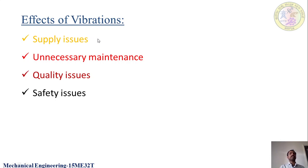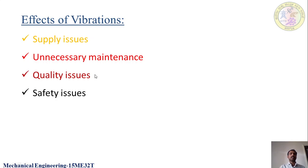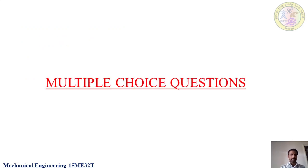Further effects of vibrations include supply issues - if there is reduced availability of machines, we cannot supply finished goods at the scheduled time. Unnecessary maintenance is also required if a machine is vibrating, which is not acceptable. Quality issues arise because if a machine tool is subjected to vibrations, the parts produced will not be accurate as desired - the surface finish or dimensional accuracy may be reduced. Safety issues also arise: if a machine tool vibrates at a higher rate it can damage and may be harmful to the operator.